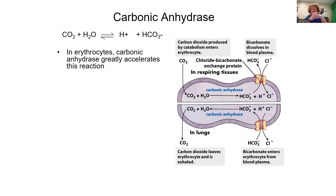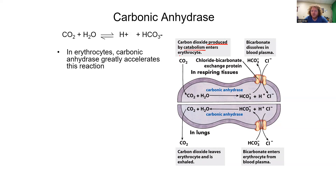Looking at this figure, I think it's important to break it down into two components — look at the top half first, then the bottom half with that understanding. Carbon dioxide produced by catabolism — sugar breakdown — enters erythrocytes.